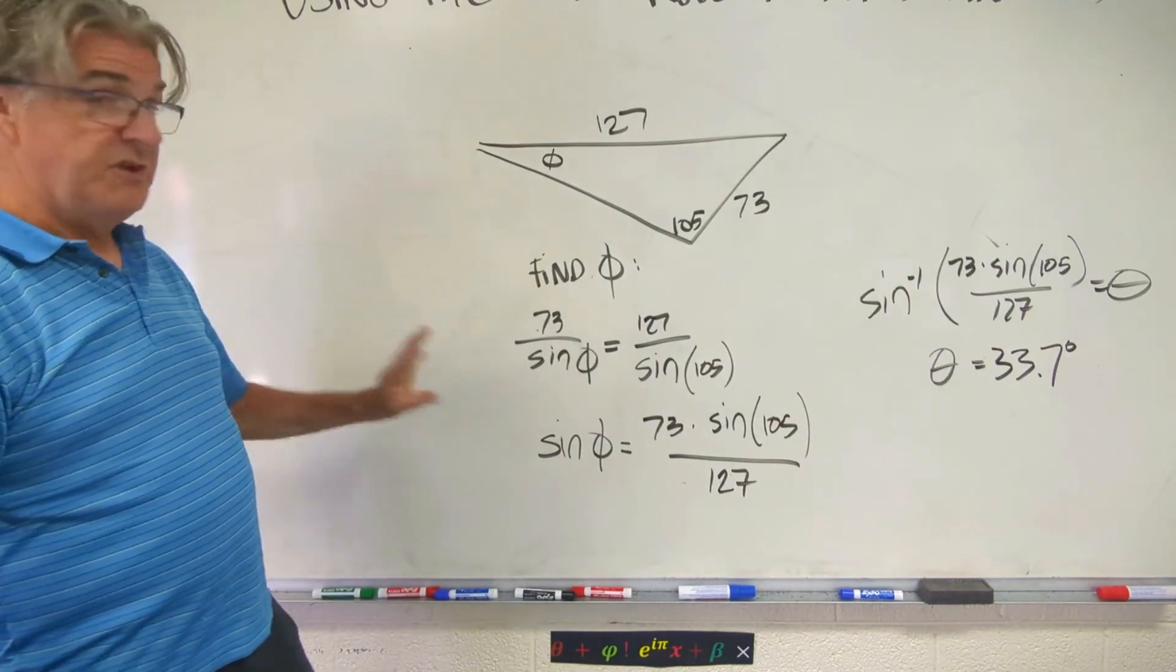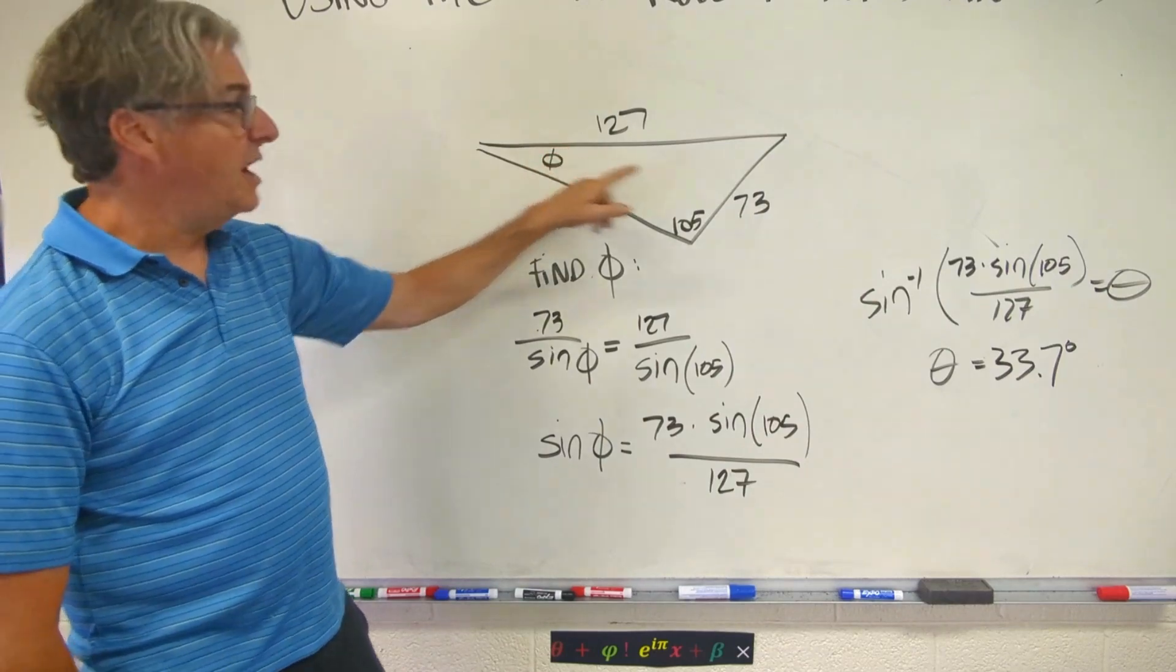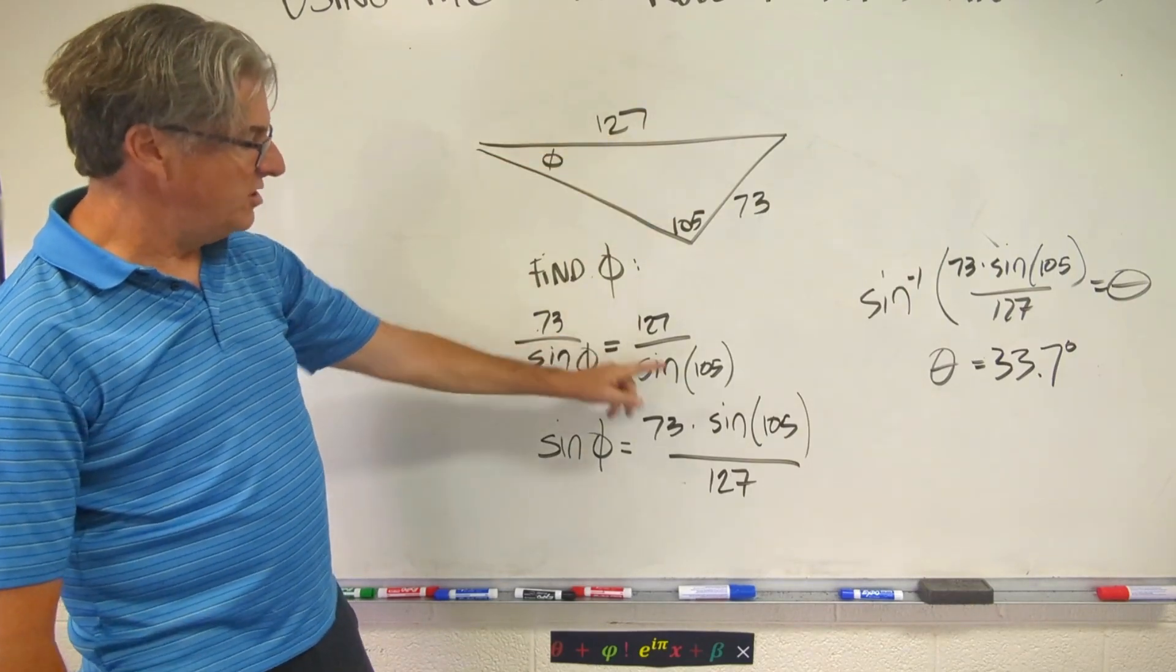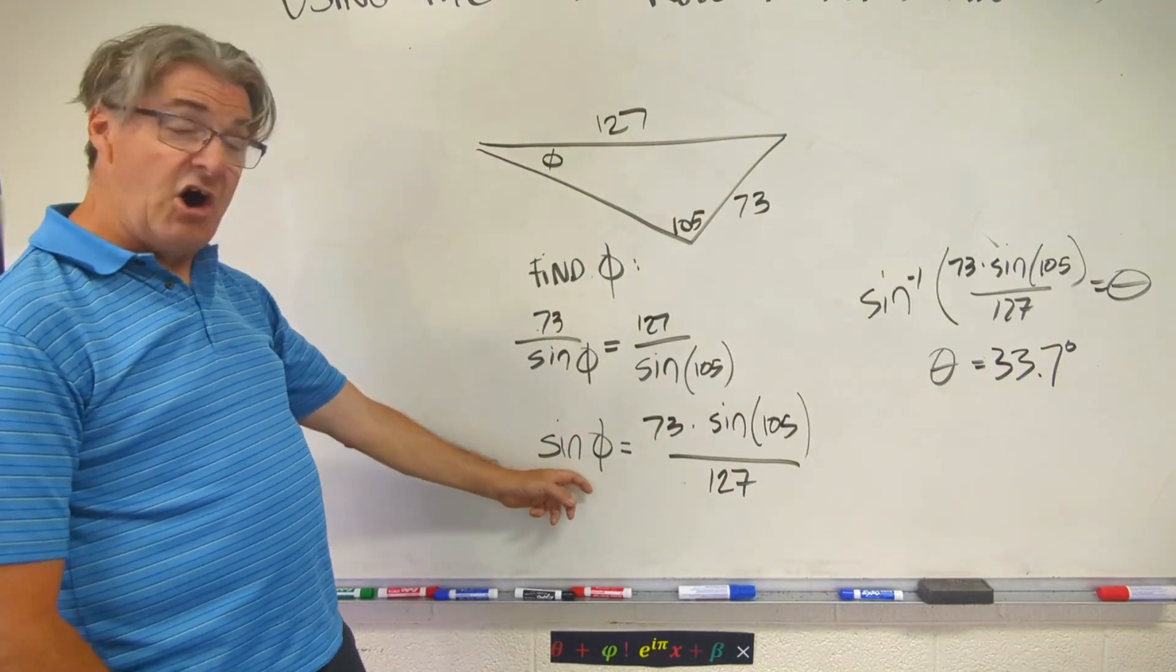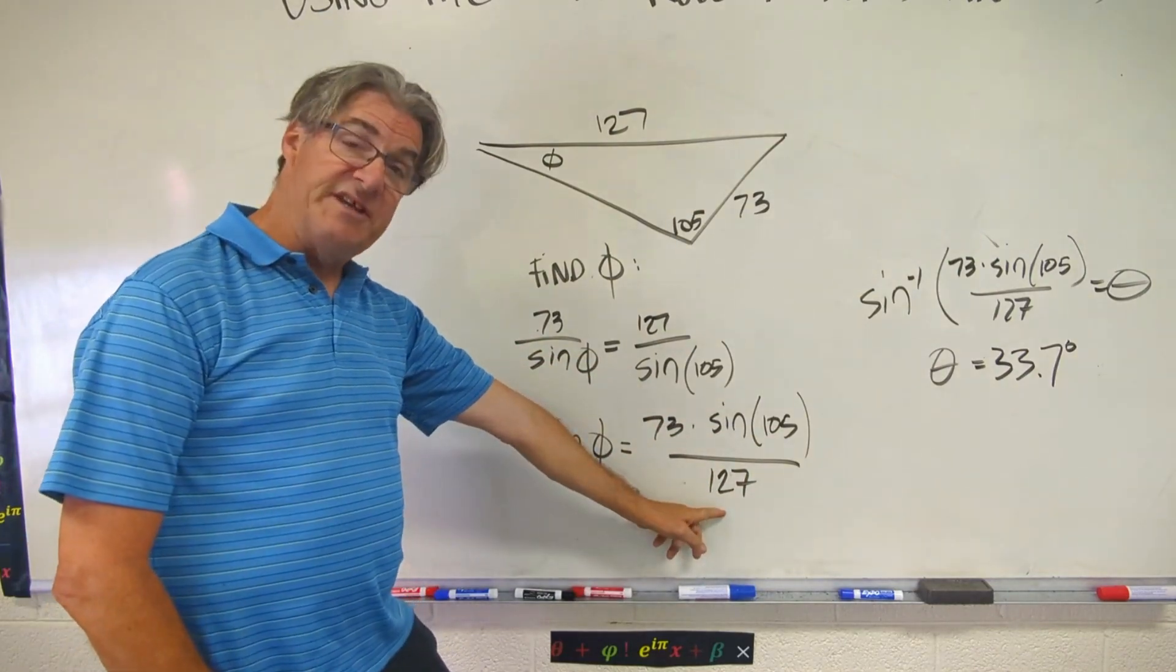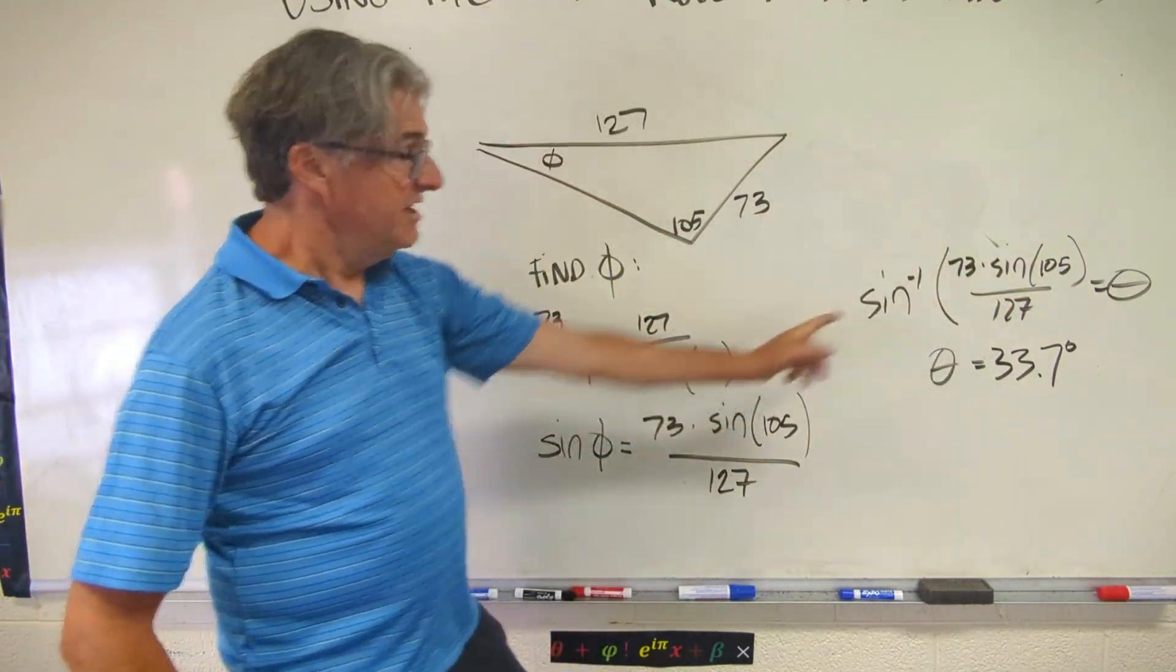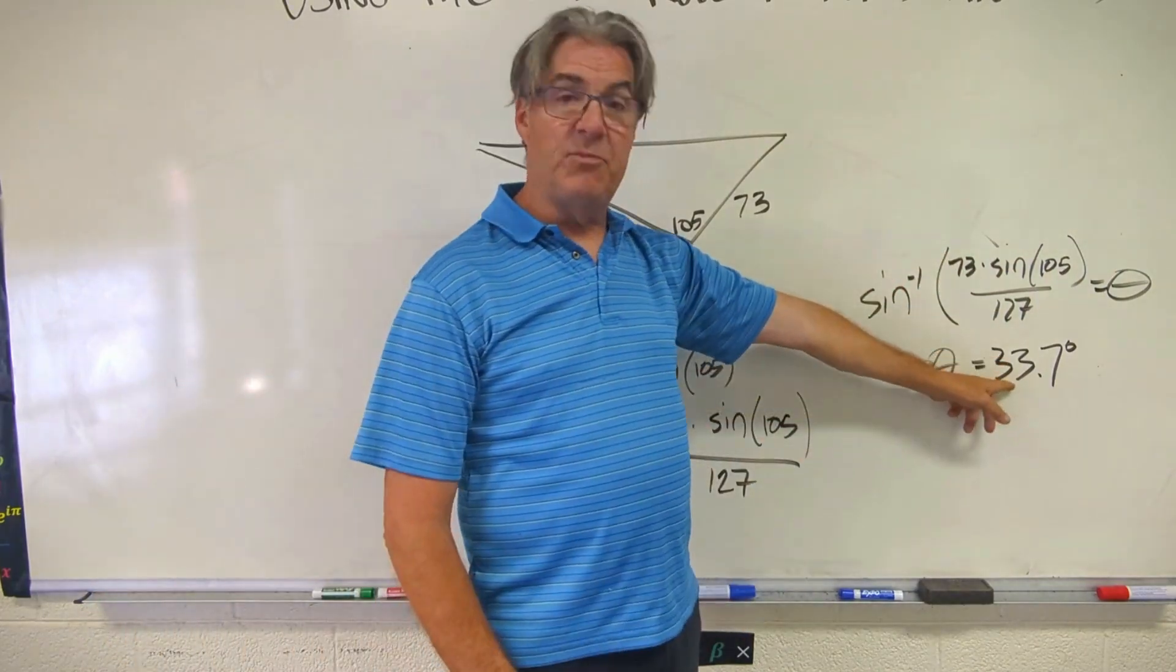Find phi. So I wrote my equation: 73 over sine phi, because phi is opposite of 73, equals 127 over sine 105. I rearrange the equation to get sine phi alone, and I have sine phi equals 73 times sine 105 over 127. Change that to the inverse function. So I have sine inverse of that, which is this, equals theta. Run that all through my calculator, I get 33.7 degrees. Alright.